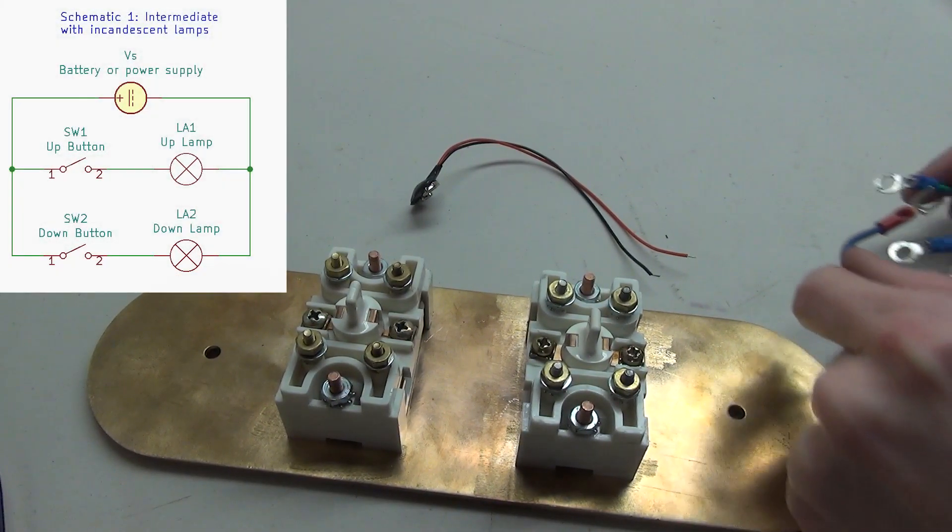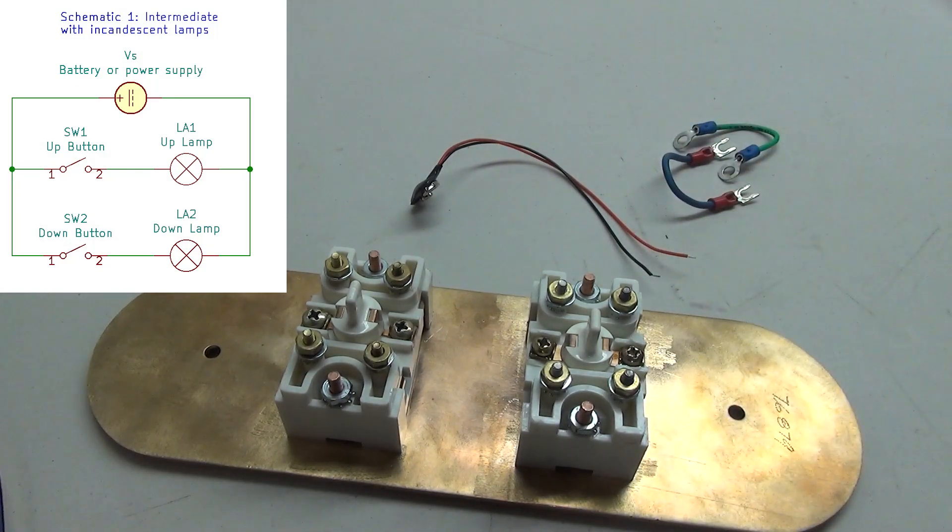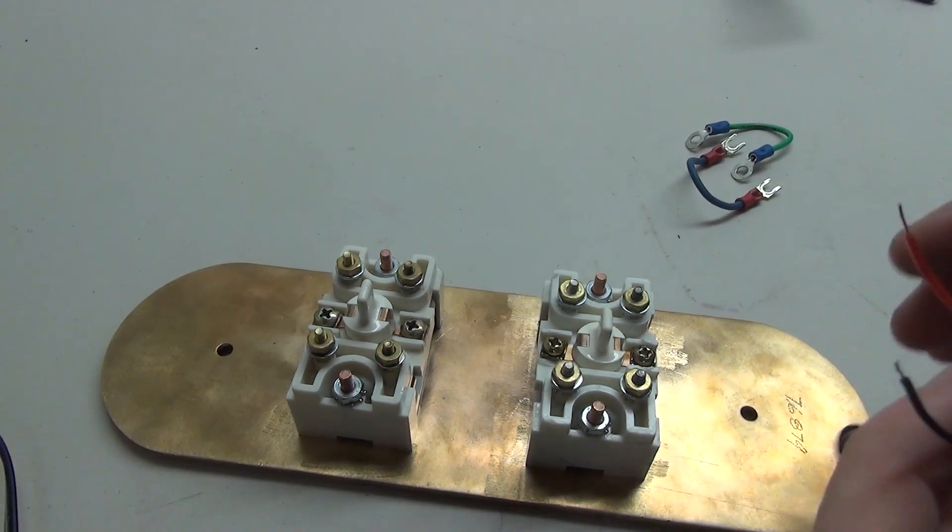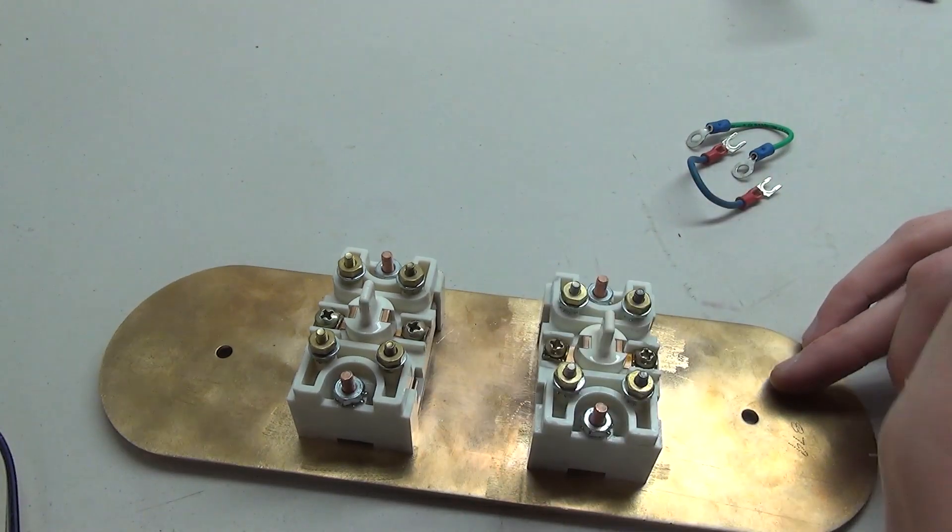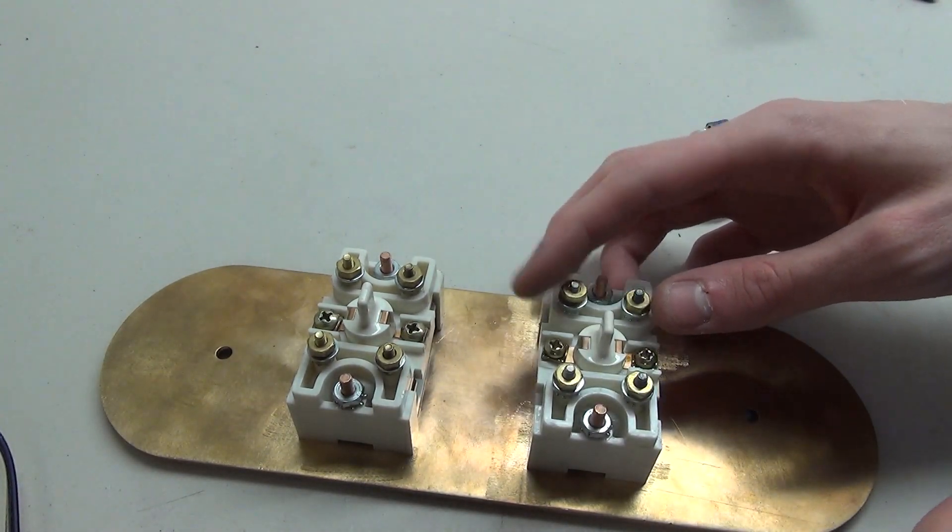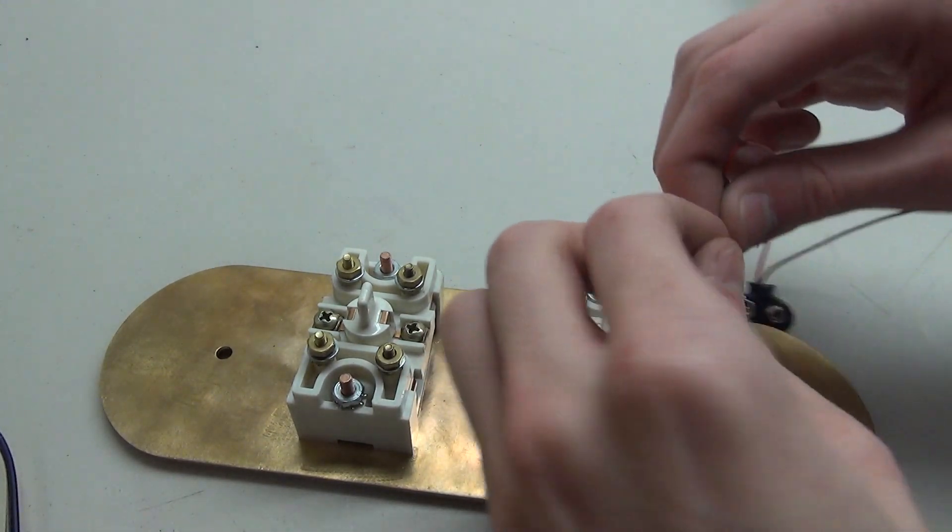I'm going to be following this schematic for my particular button, and this schematic is available on my website. In this video I'm wiring an intermediate call station, but the same wiring method applies to any amounts of buttons. You can have one button, two buttons, or even 20 buttons and it'll still work. Everything's wired in parallel.